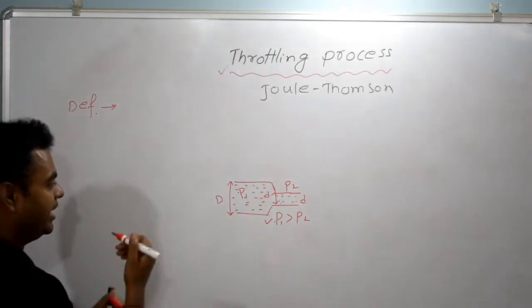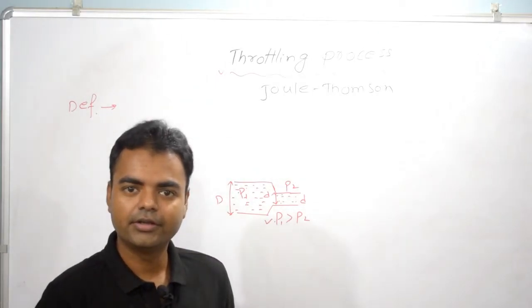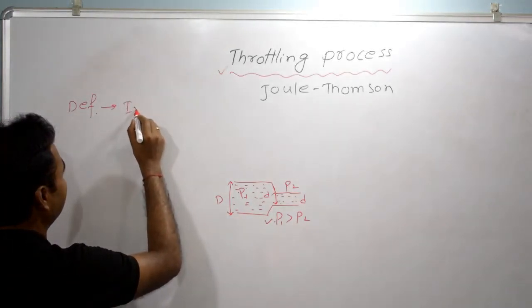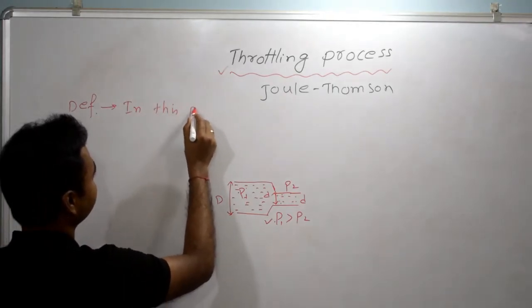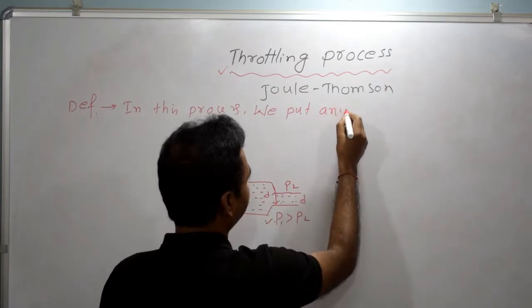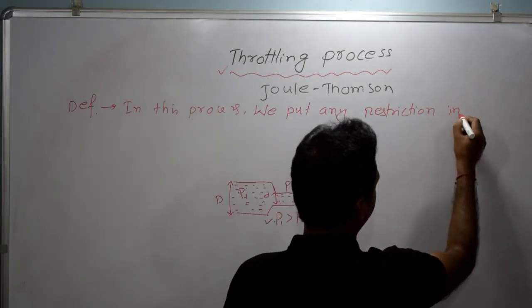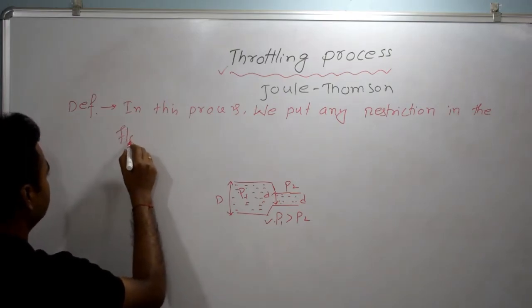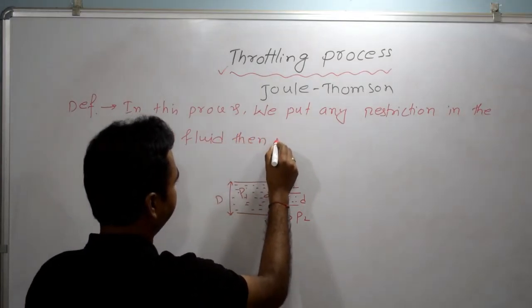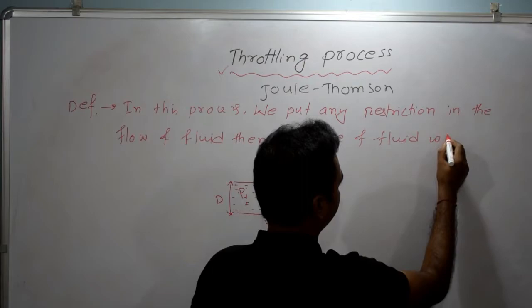So in throttling process, if we put any restriction in the flow of fluid, then the pressure of fluid will decrease. That is known as the throttling process.